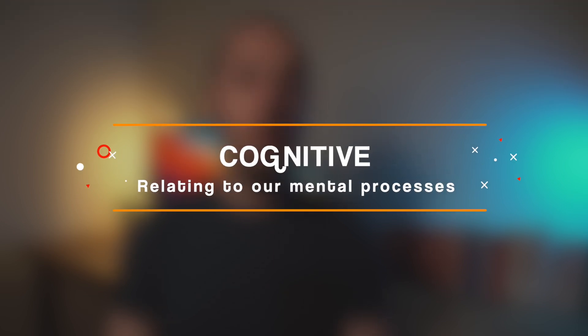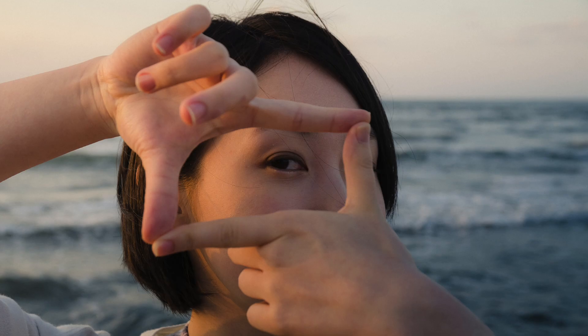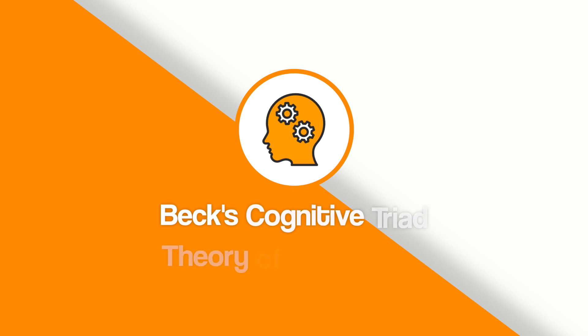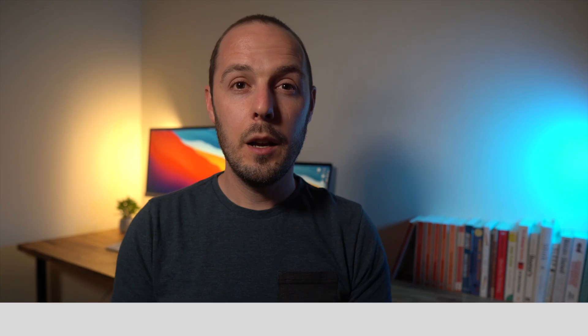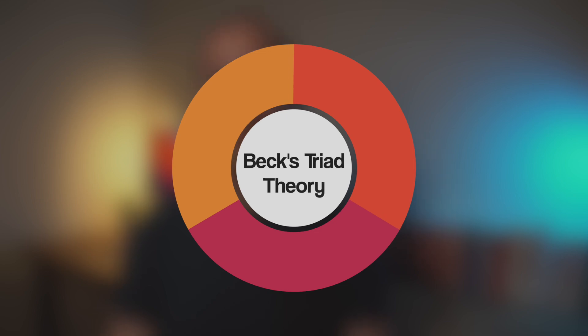When we look at cognitive explanations we first need to be clear what we mean by the word cognitive. This word refers to mental processes, including things such as your thoughts, your perceptions, your attention and your memory. Explanation one is Beck's Cognitive Triad Theory of Depression. Aaron Beck proposed a three-part explanation for depression, hence why it's called the Triad Theory — triad meaning three.